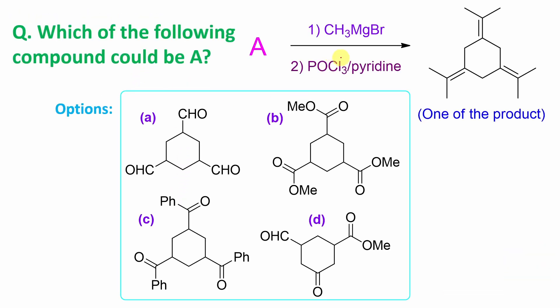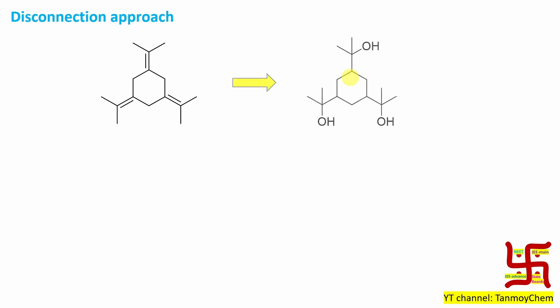For that purpose, first you need to look at the reagents. In the second step, POCl3-pyridine is given. POCl3-pyridine is a dehydrating agent, so you can expect there could be an alcohol. From here you can expect water removal — so through this dehydration, you will get a double bond containing molecule.